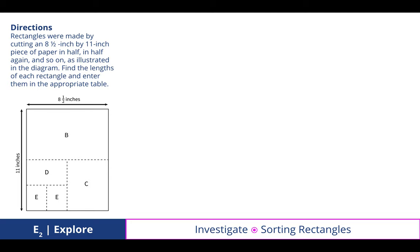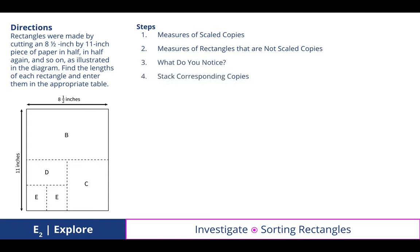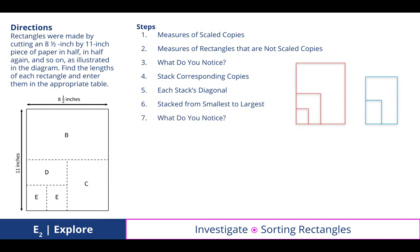Then we experimented by taking an 8 and a half by 11 sheet of paper and halving it each time. What we discovered is that if we draw a diagonal through all five of them, they don't all go through the corners, which means they're not all similar. When we stack the corresponding copies together and draw each diagonal, we can see that three of them were similar and the other two were similar to each other.